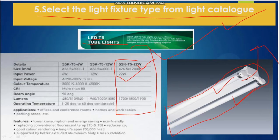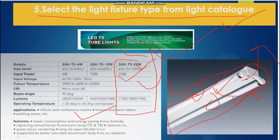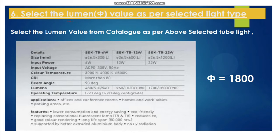From the catalogue we have considered this model — T5 22-watt tube light — with two tube lights in one set. So the selected light fixture has a wattage of 22W. Now finally we select the lumen value as per the selected light type, which is this 22-watt tube light.